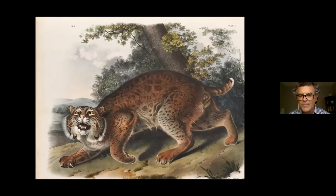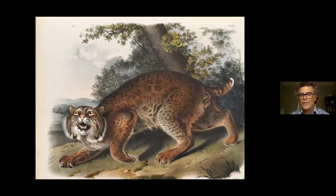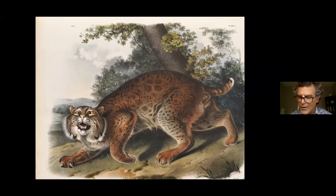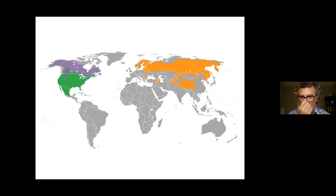The other player is the bobcat, again painted by Audubon. This is more of a southern animal with smaller feet, and perhaps less familiar to us in Ontario.